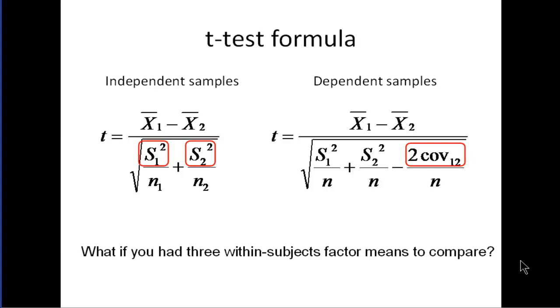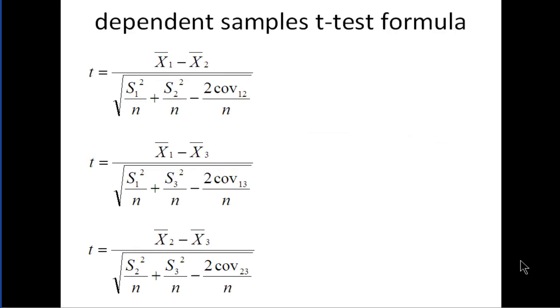What if you had three within subject factor means to compare? So it's not just two means like the dependent sample case, but instead a repeated measures ANOVA. In that case, if you think of the differences between the means and you had three means, you could test the hypothesis with three different dependent sample t-tests as to whether the three means are equal to each other. That's not a very powerful way to do it because you ramp up your per comparison, your family-wise error rate increases.